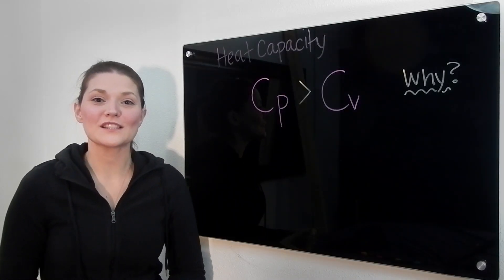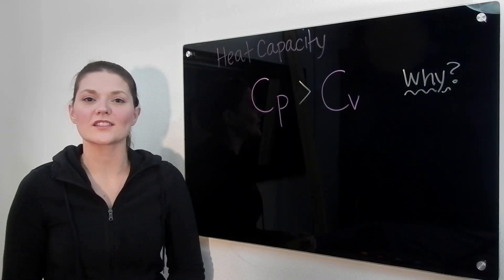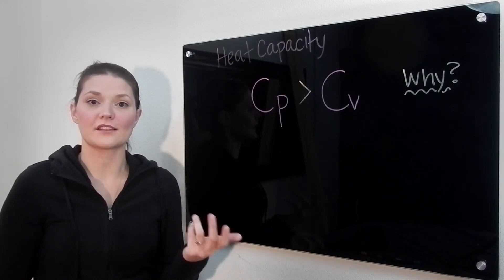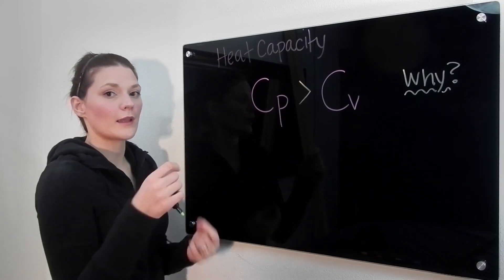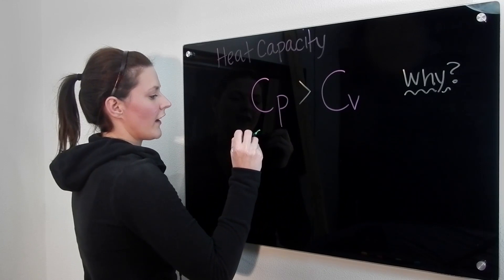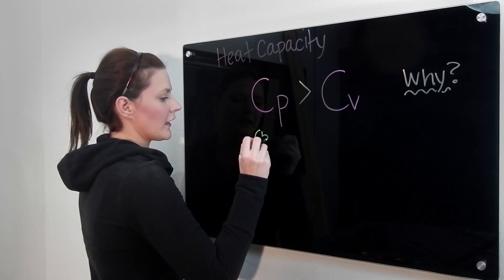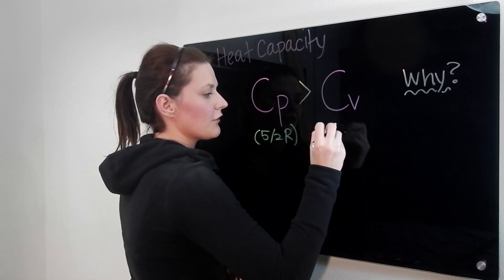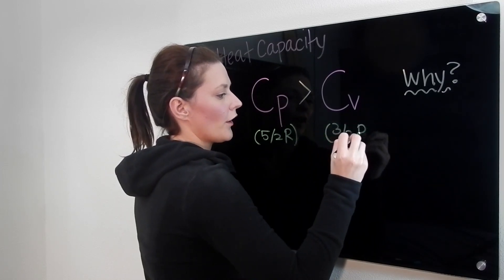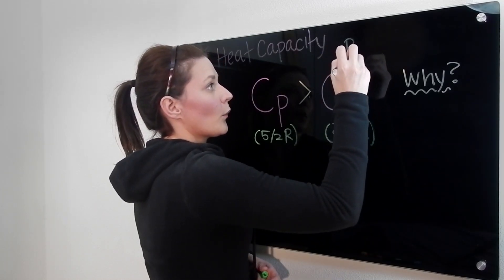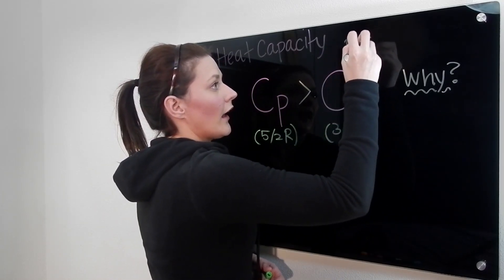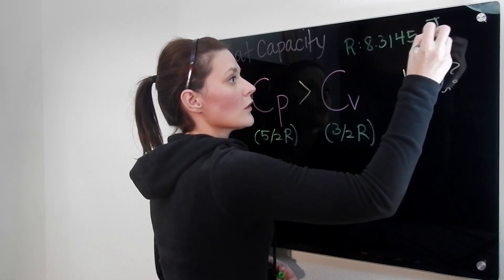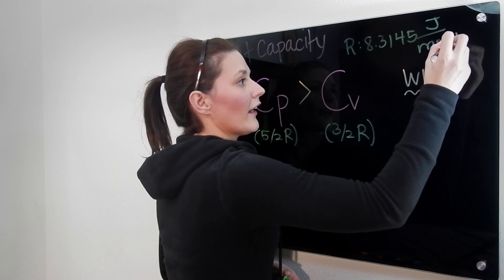Hi everyone. In this video we're going to talk about why it is that Cp has a larger value than Cv. For a monatomic ideal gas, the value of Cp is 5/2 R, and the value of Cv is 3/2 R. The value of R that we're using is 8.3145 joules per mole Kelvin.